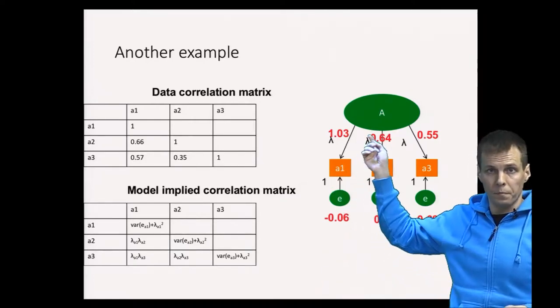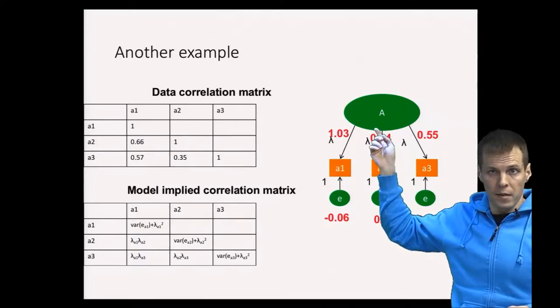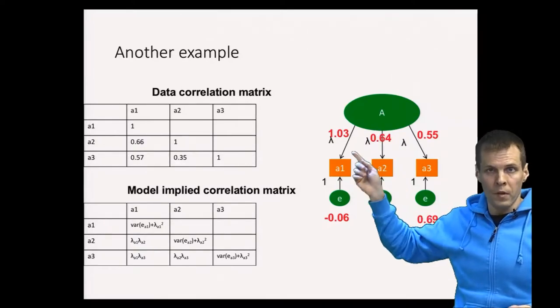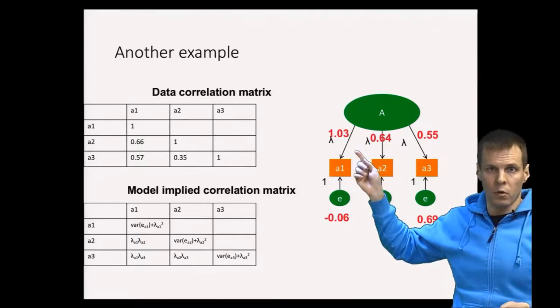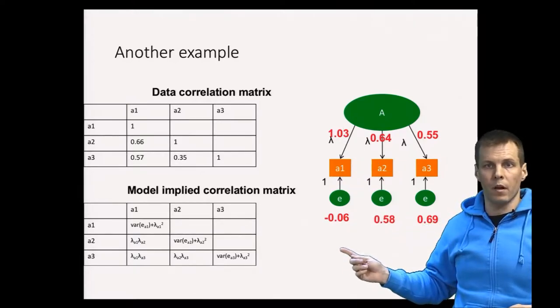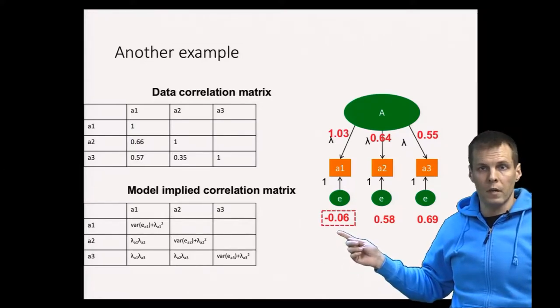These are standardized so the factor is scaled by setting the variance of the factor to be one. We can see that we have a correlation that exceeds one that is not possible and we have variance that is below zero which is not possible either. So this is the Heywood case.